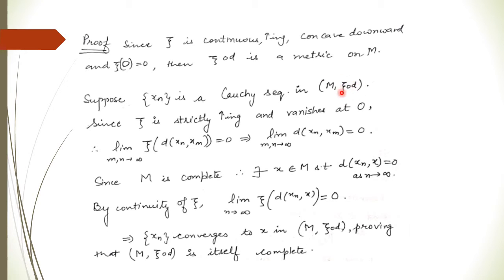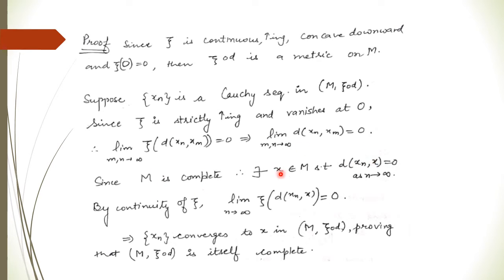Since ξ is strictly increasing and vanishes at 0, for a Cauchy sequence with respect to ξ∘d, the limit of ξ(d(xₙ, xₘ)) = 0 as n, m → ∞ implies that d(xₙ, xₘ) → 0 as well, because ξ vanishes at 0 and is increasing. This implies xₙ is a Cauchy sequence in m.